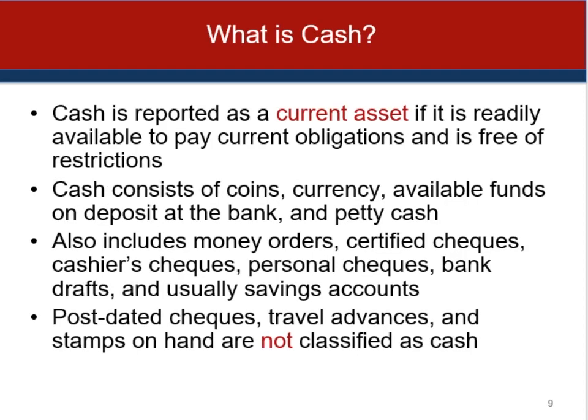Cash is a financial asset and a financial instrument. It consists of coin, currency, bank deposits, and negotiable instruments such as money orders, certified checks, cashiers' checks, and bank drafts. Cash designated for a specific use other than payment of currently maturing obligations is segregated from the general cash account. This amount may be classified as a current asset if it will be dispersed within one year or the operating cycle, whichever is longer; otherwise, it should be shown as a non-current asset.